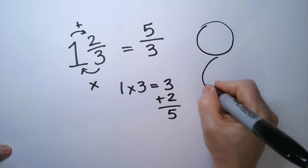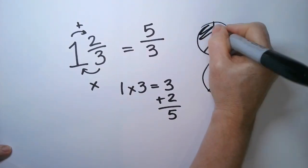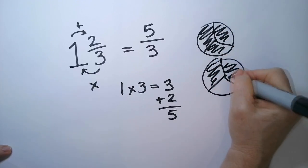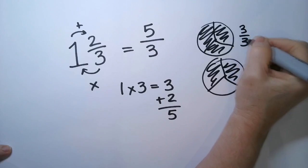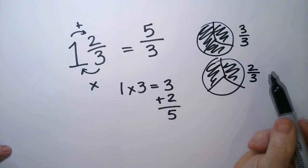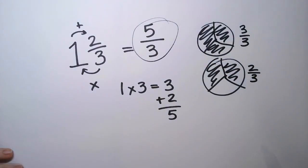So, 1 and 2 thirds looks like this. So, both of them are divided into thirds. Okay? So, this one is 3 over 3, which is the same as 1. This one is 2 thirds. Okay? So, 3 thirds plus 2 thirds is 5 thirds. Okay?